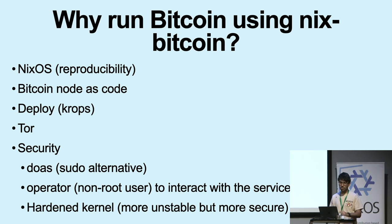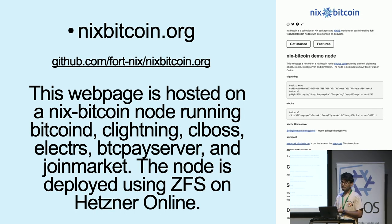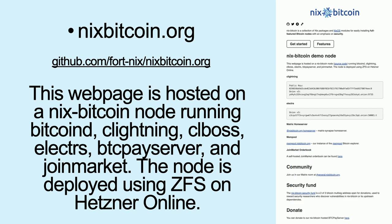I will show some examples. The principal example is nixbitcoin.org, which is from the main project. They have a website, and at that website there's the source code linked there. It's deployed using VPS and is online. It has a lot of features and services running: Bitcoin, Lightning, and BTCPay Server — a tool to receive Bitcoin, for example if you have a store or want to receive donations. In the source code, you have all the code related to how to deploy it, how to set up the disks, and everything.